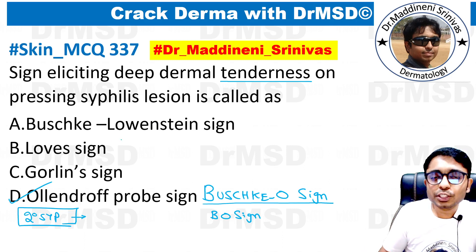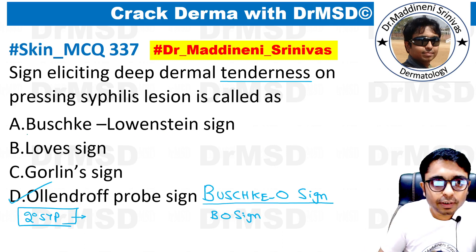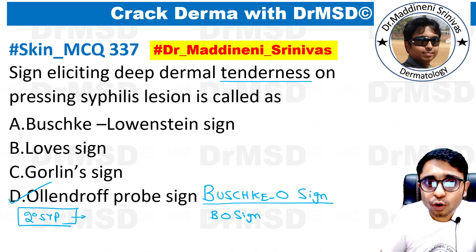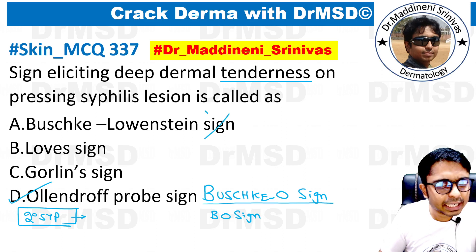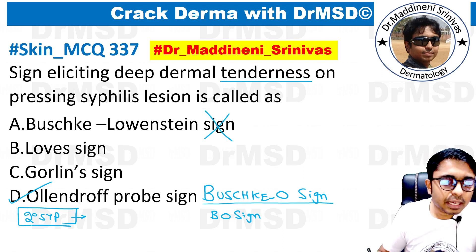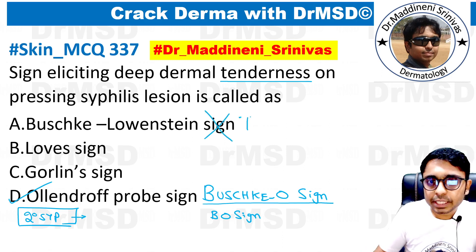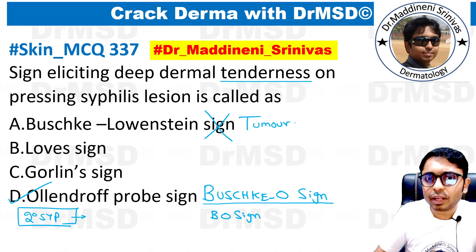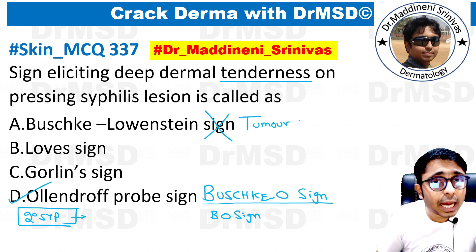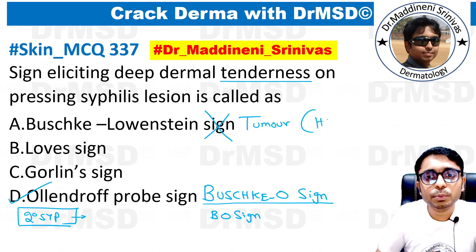Coming to the rest of the options: Buschke-Löwenstein sign does not exist. In fact, Buschke-Löwenstein tumor is nothing but a form of verrucous carcinoma, for which the underlying cause is human papillomavirus.